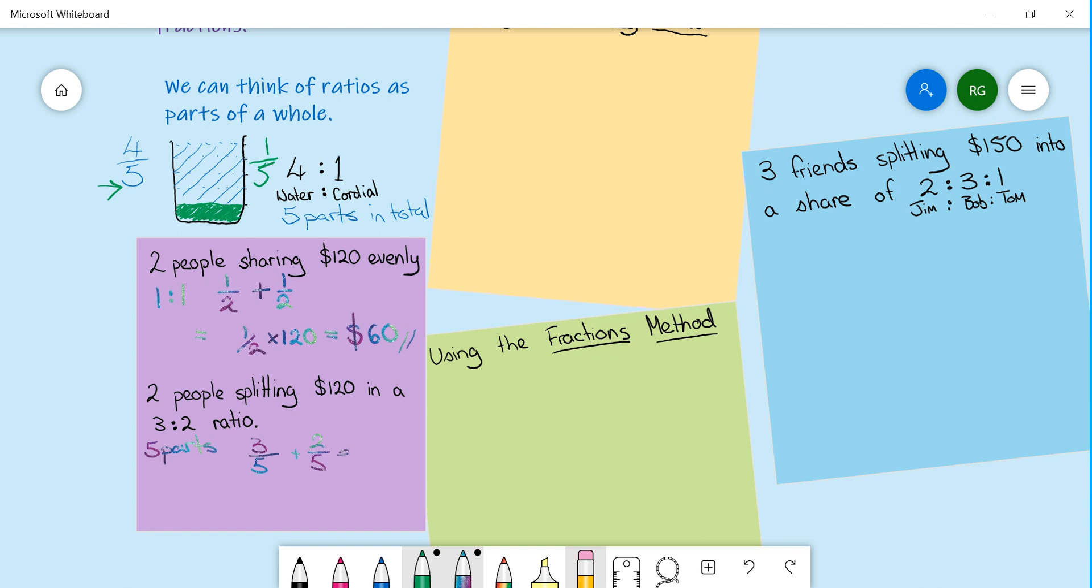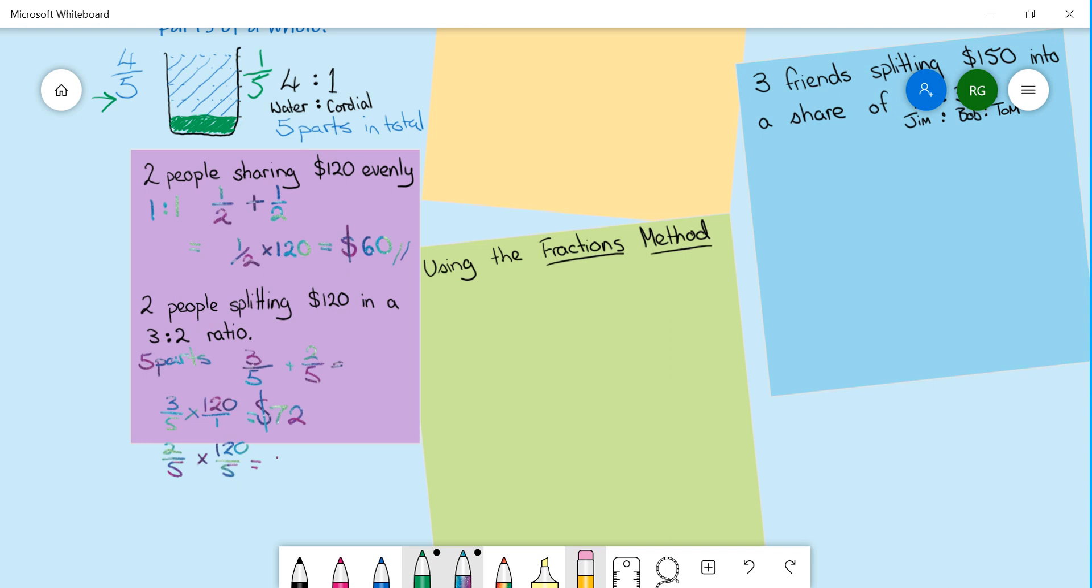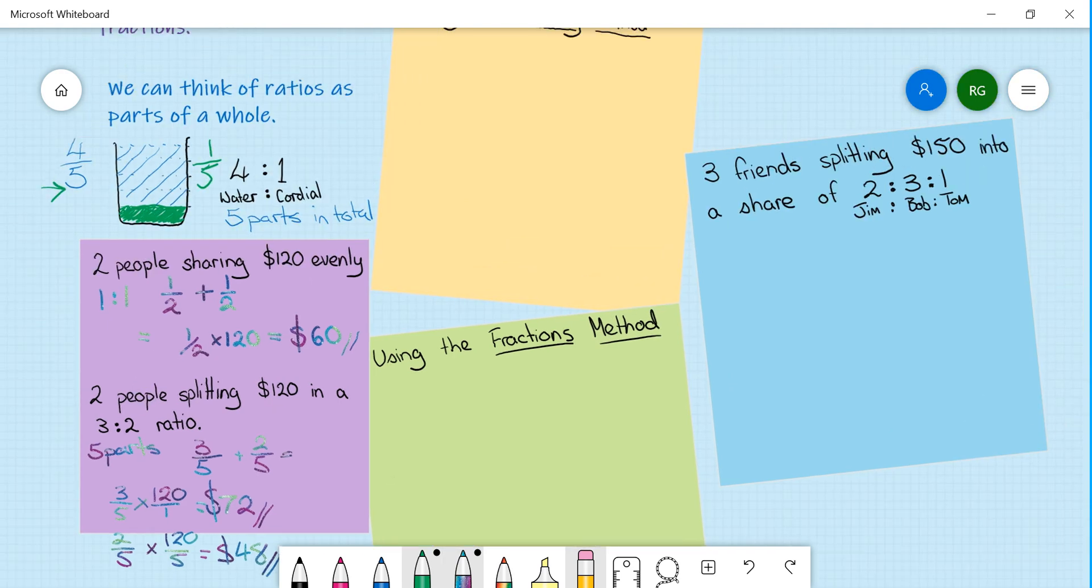When we multiply each person's fraction by the total amount, we're going to end up with 72 for this person and the person that got two fifths will end up with $48. So we get two different amounts. Now it's also important to make sure, do they seem right? And in this case they do. One person is getting a little bit more than the other.